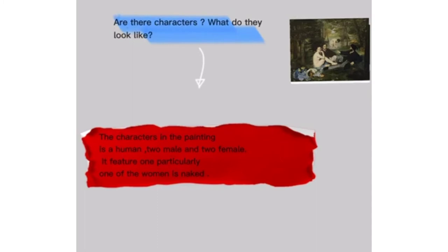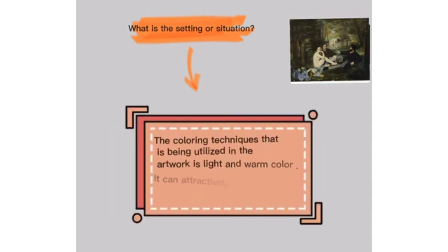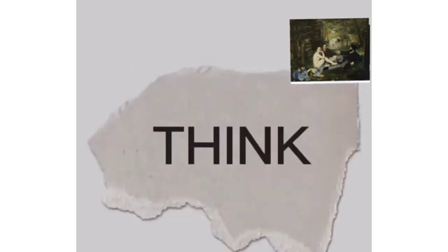Are there characters? What do they look like? The characters in the painting are human — two males and two females. It features particularly one woman who is naked. The setting presented in the painting is a beautiful forest with healthy fruits and fresh air. The coloring technique utilized in the artwork is light and warm color, which attractively gets the attention of the viewer.